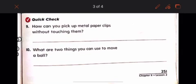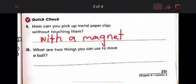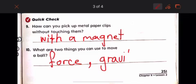Let's solve this together. How can you pick up metal paper clips without touching them? With a magnet. What are two things you can use to move a ball? Force. We could use force and gravity. How gravity? When you try to lift the ball off your hand, what will happen to the ball? The gravity will pull the ball toward the ground.